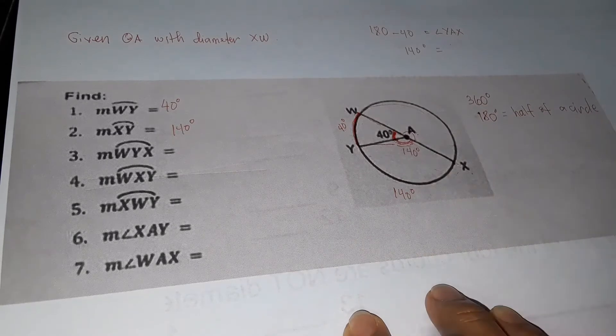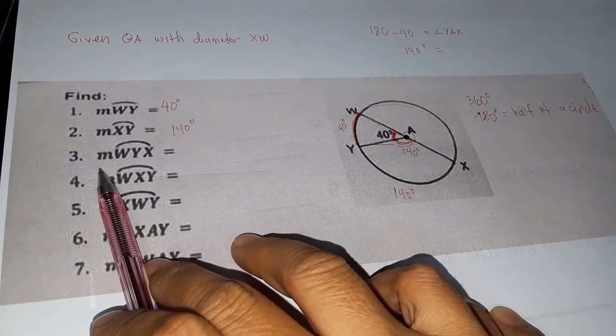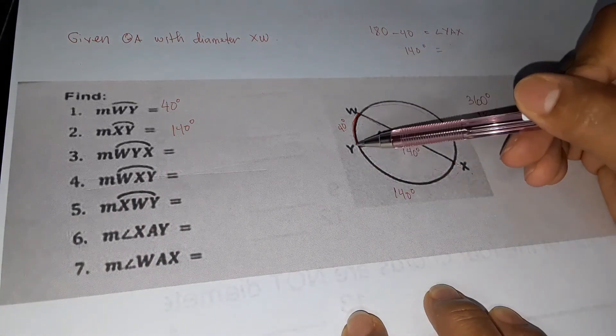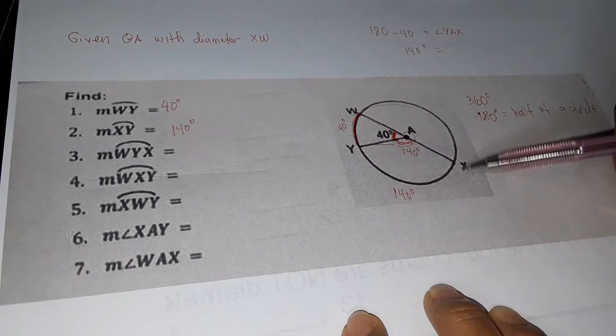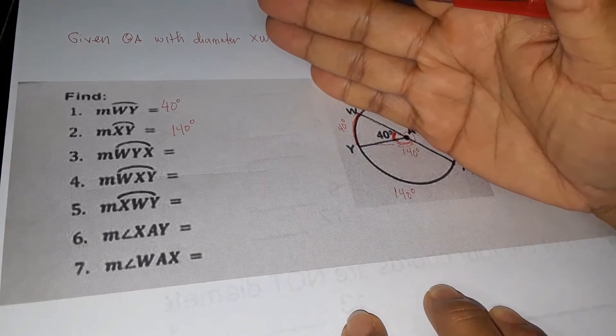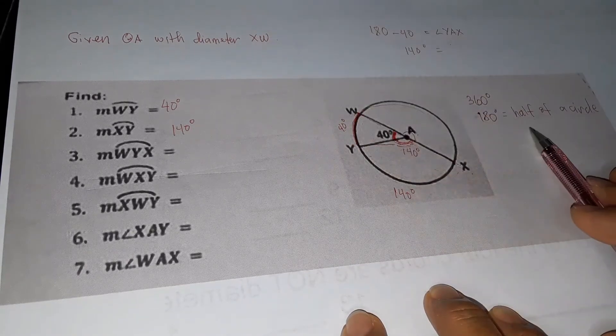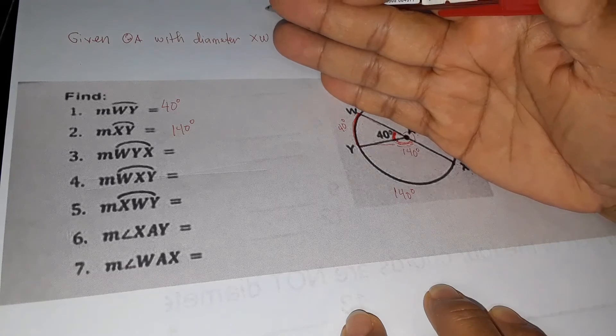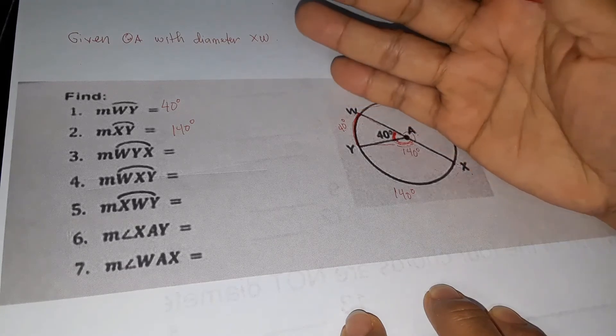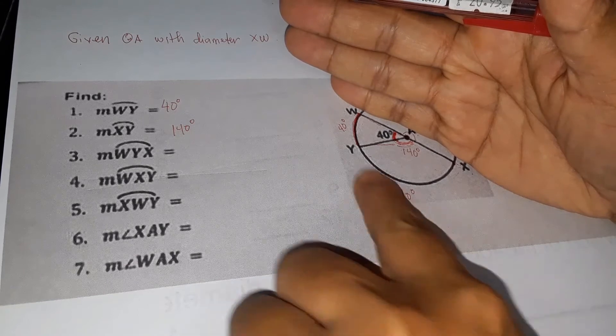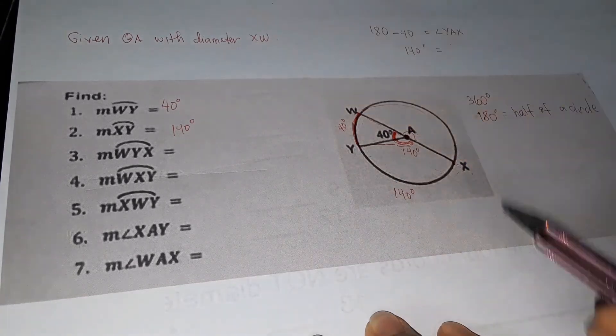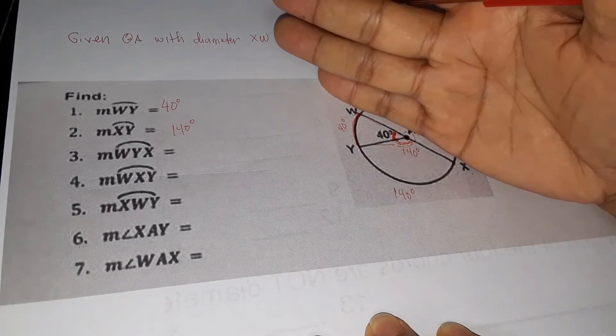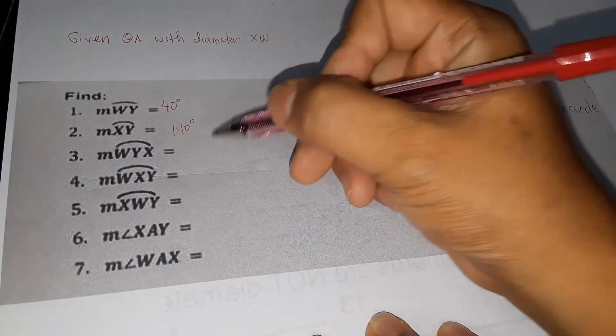Next, what is the measurement of arc WYX? That is half of a circle. As I said earlier, if it's half of a circle, it measures 180 degrees. That is automatic. If you want to verify, you can also add 140 plus 40 equals 180, but it's easier to just memorize that half of a circle is always 180 degrees.